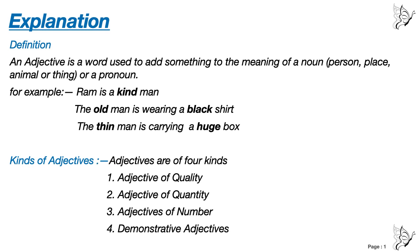Now first, the definition of adjective. An adjective is a word used to add something to the meaning of a noun — that is, a person, place, animal or thing — or a pronoun.